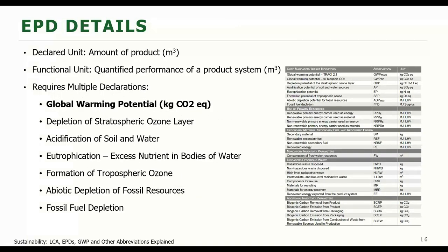The requirements of the PCRs say that EPDs have specific information. Each EPD has a declared unit, which shows the relationship between the amount of product and the impacts. Most wood products use cubic meters — so each impact, whether in kilograms or megajoules, is per cubic meter of lumber, plywood, or OSB. Several impacts are required in the EPDs. AWC's EPDs have some 20 or so declared impacts, but the big seven are required. A lot of the current focus is on global warming potential, sometimes even at the neglect of the others.